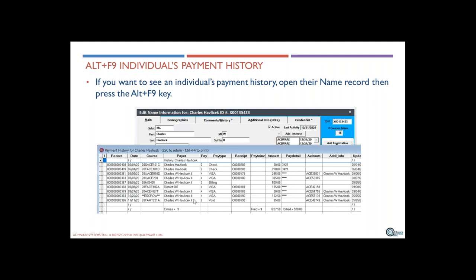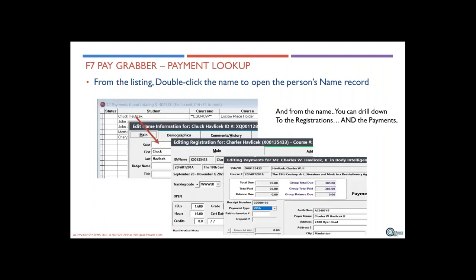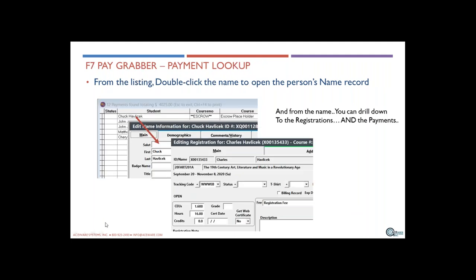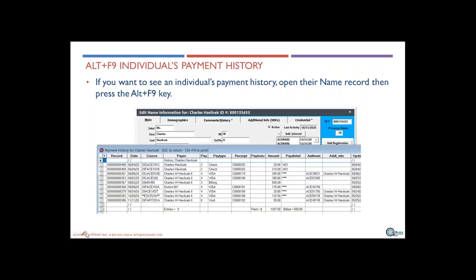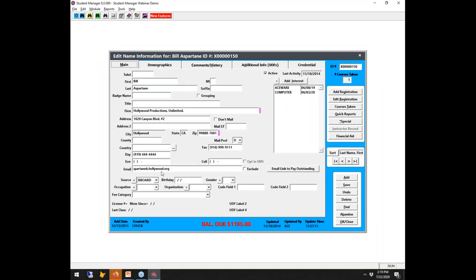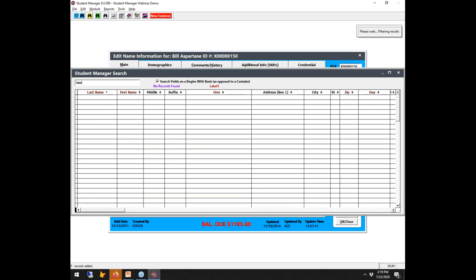Alt F9 — payment history. If you want to see an individual's payment record and history, when you're on the name record or the registration record, pressing Alt+F9 will bring up a list of all payments on file for that person — payments, refunds, and escrow values are all there for display.